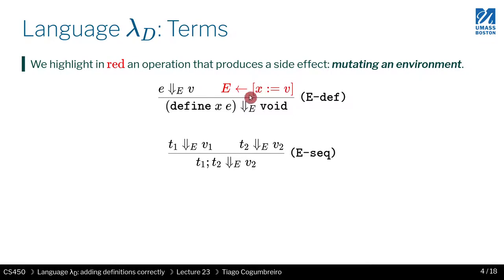So what we're trying to explain with this rule is that we're going to evaluate the expression first. And then we're going to take the environment E, and we are mutating it. So we're representing mutation with this little arrow here. And this little arrow is saying that we're updating. X becomes assigned to V.